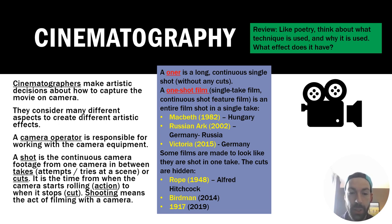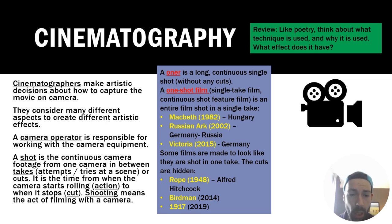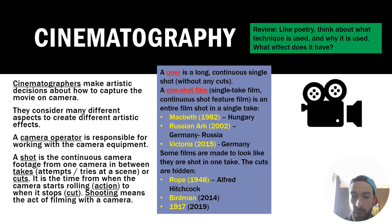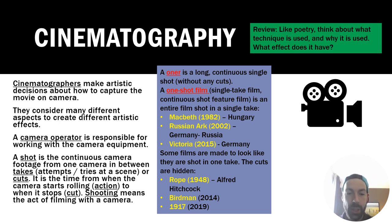A camera operator is the person responsible for working with the camera equipment. A shot is the continuous camera footage from one camera in between takes. Takes are different attempts or tries at capturing a scene — also called cuts, which is when the camera rolling stops. A camera shot is the time from when the camera starts rolling — we say 'action' — to when it stops — we say 'cut.' We call this action of filming with a camera shooting.